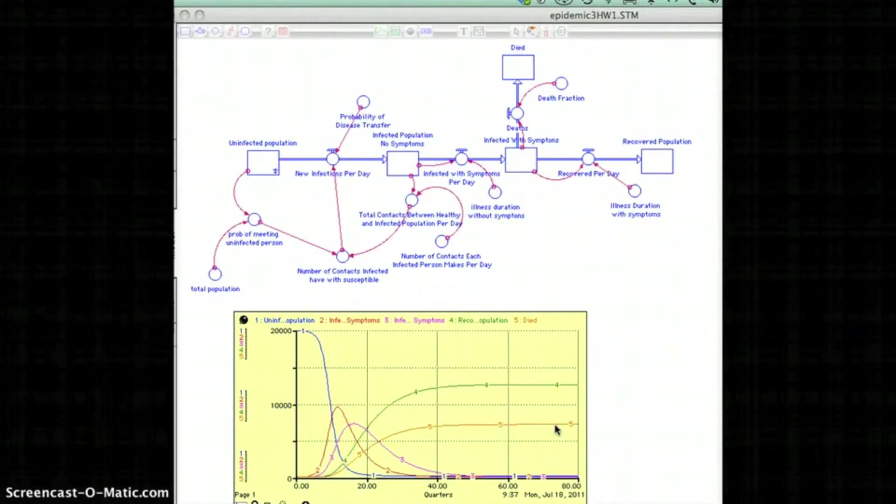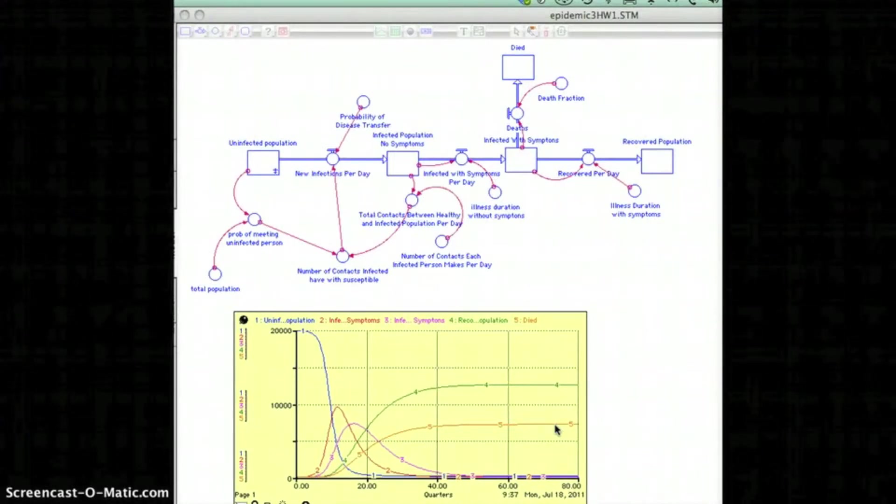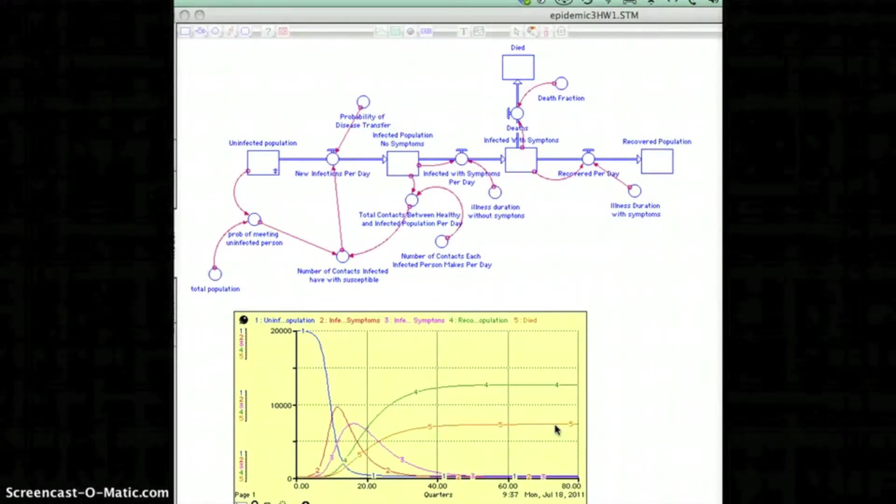And my understanding is that, for example, the federal government used a Stella model of the flu epidemic that occurred a few years back where there wasn't enough vaccine, and the government had to kind of strategically come up with who should get the limited amount of vaccine.